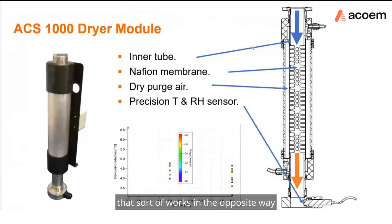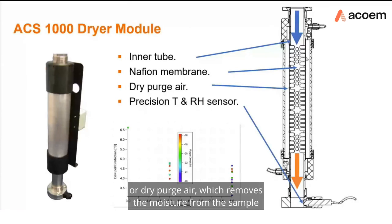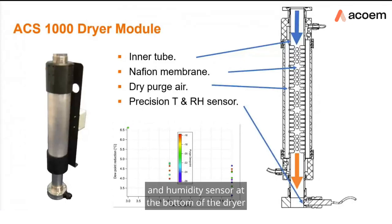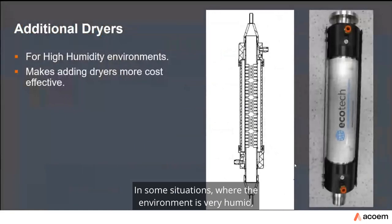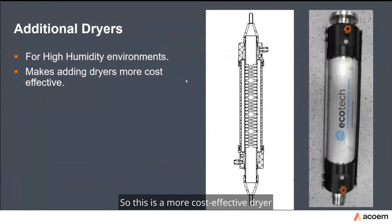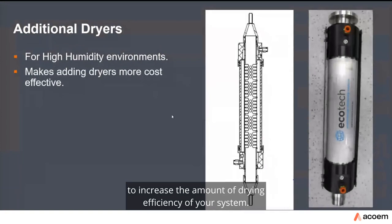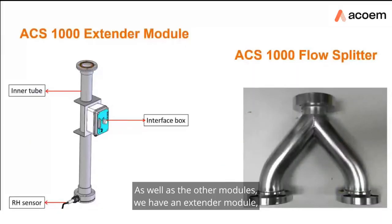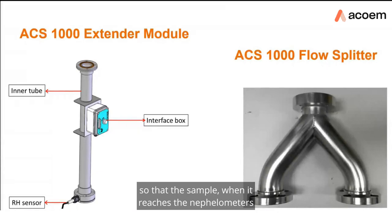The dryer module works in the opposite way with a similar size to the humidifier. The inner tube is covered with a Nafion membrane and on the outside is a dry purge air flow which removes moisture from the sample. A precision temperature and humidity sensor at the bottom of the dryer measures the outlet humidity. In very humid environments, additional cost-effective dryers can be placed in series with the ACS dryers to increase drying efficiency. There is also an extender module — a solid tube — that extends the path length for both channels, ensuring the wet and dry samples reach the nephilometers at the same time so enhancement factor calculations use data from the same time frame.